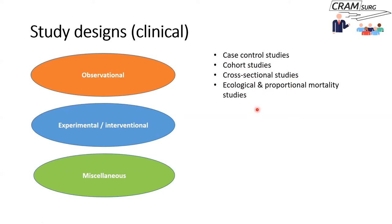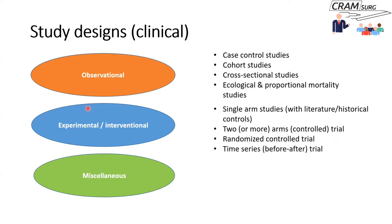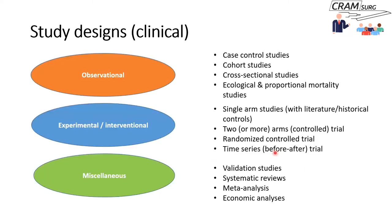The next group are the experimental studies, where there is an intervention that aims to change the natural history of the disease process. They could be single arm studies, or two or more arm studies with at least one arm being the control group. If you introduce the methodology of randomization into a control trial, you get a randomized control trial. Another type is a time series or before-and-after trial — uncommon in surgical research. In the miscellaneous category, you've got validation studies, systematic reviews, meta-analysis, and economic analysis.